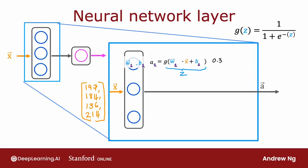Now let's look at the second neuron. The second neuron has parameters w2 and b2, and it computes a2 equals the logistic function g applied to w2 dot product x plus b2. This may be some other number, say 0.7, because in this example there's a 0.7 chance that the potential buyer will be aware of this t-shirt.